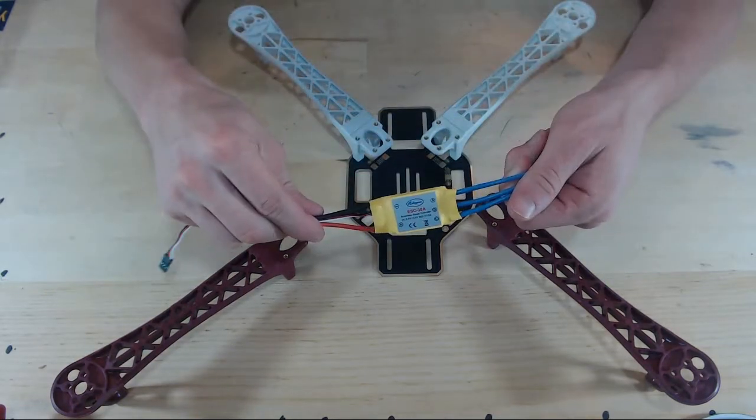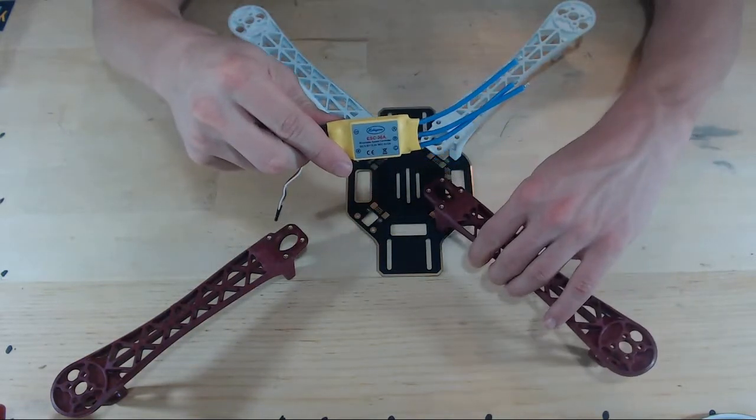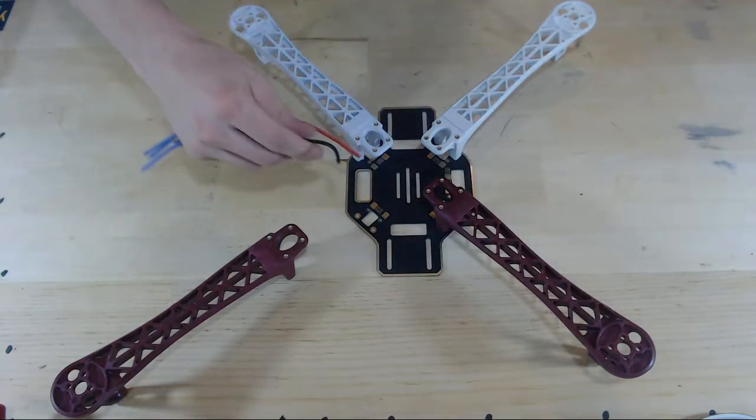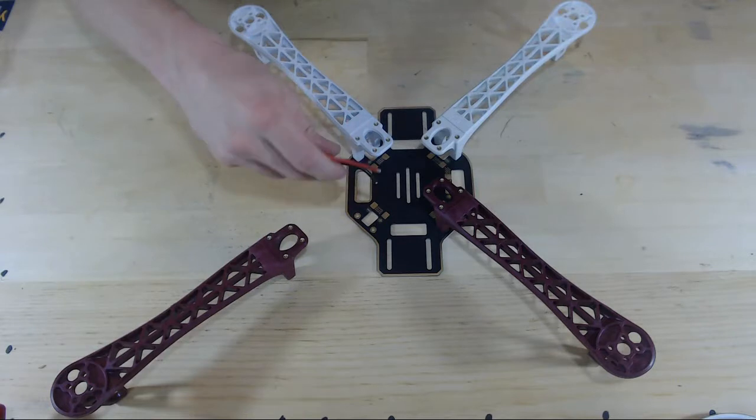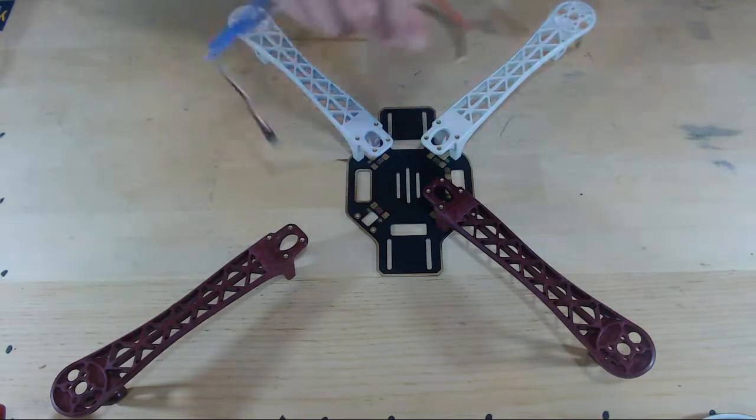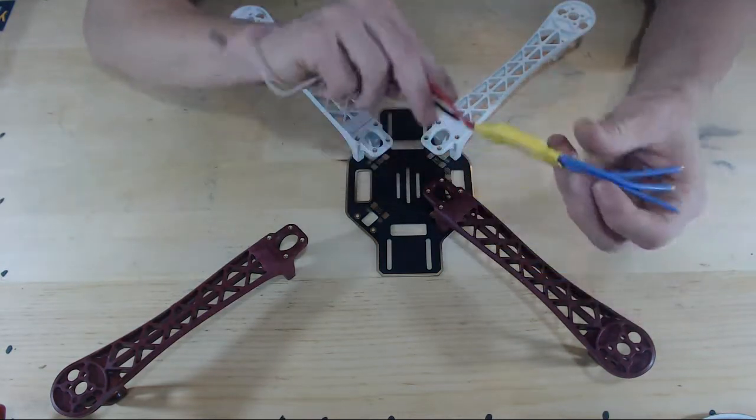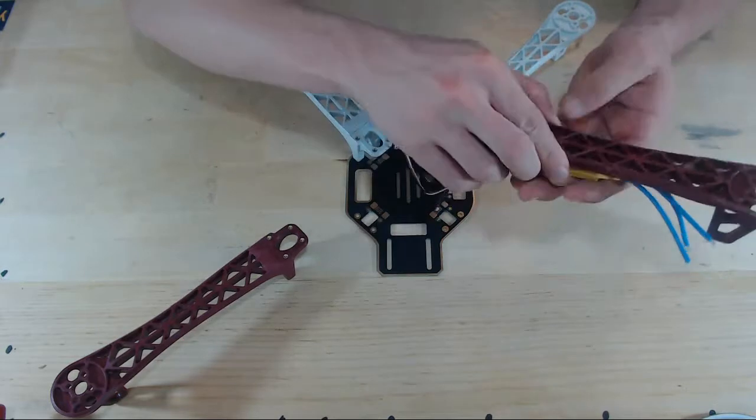Next, we have our ESCs. Now the ESCs, as we've already said, will be soldered to the electrodes of our power distribution board or our plate. And the main decision is, do we place the ESC on the top of every arm or on the bottom of every arm?